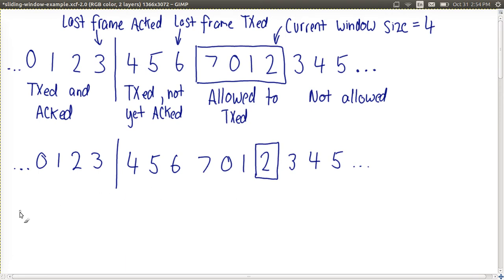So before we had 0, 1, 2 and 3 transmitted and ACK, but with the reception of the ACK, we now know that 4 and 5 have been transmitted and also ACK. So we'll move this vertical bar to here to indicate that's the separation of transmitted and ACK up until 5.